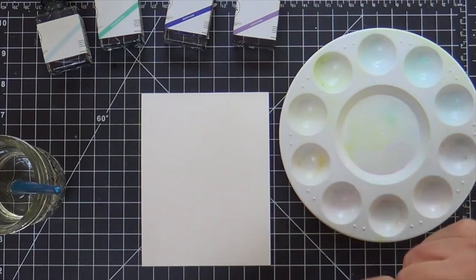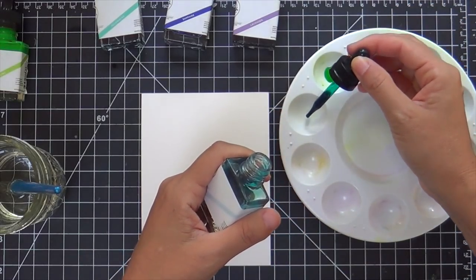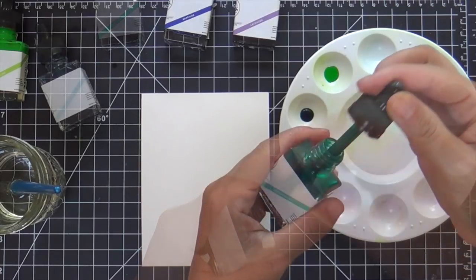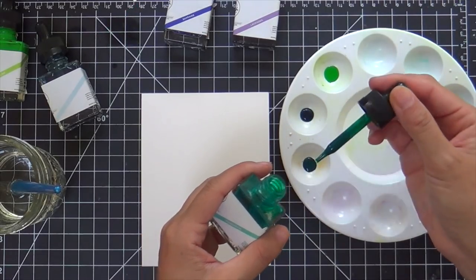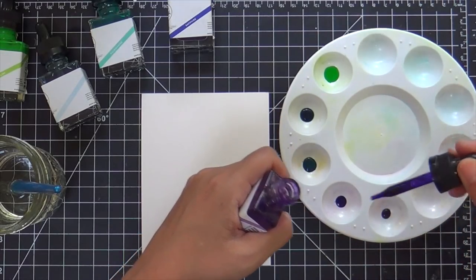So I'm going to start dropping in some drops of these liquid watercolors. First up is Key Lime, then a little Sky Blue, next is some Aquamarine, then a little bit of Sapphire, and lastly some Lavender.